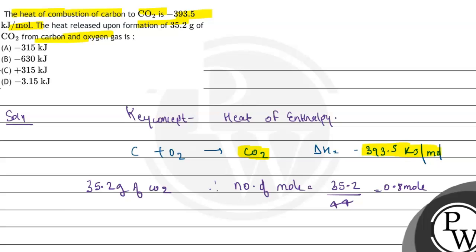Now we can find delta H of this, so heat released for 0.8 mole is equal to 0.8 times minus 393.5. This is equal to minus 350 kJ.